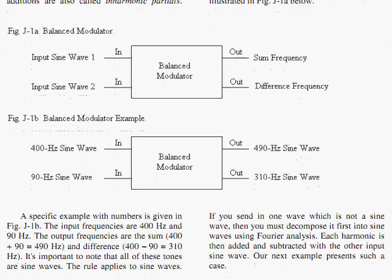So let's do that with an example. Here we have a 400 Hz sine wave and a 90 Hz sine wave. What comes out is 490 because you have to add them together, and you subtract them and you get 310. Now, what's the relationship between 310 and 490? That's weird, and that refers to inharmonicity.